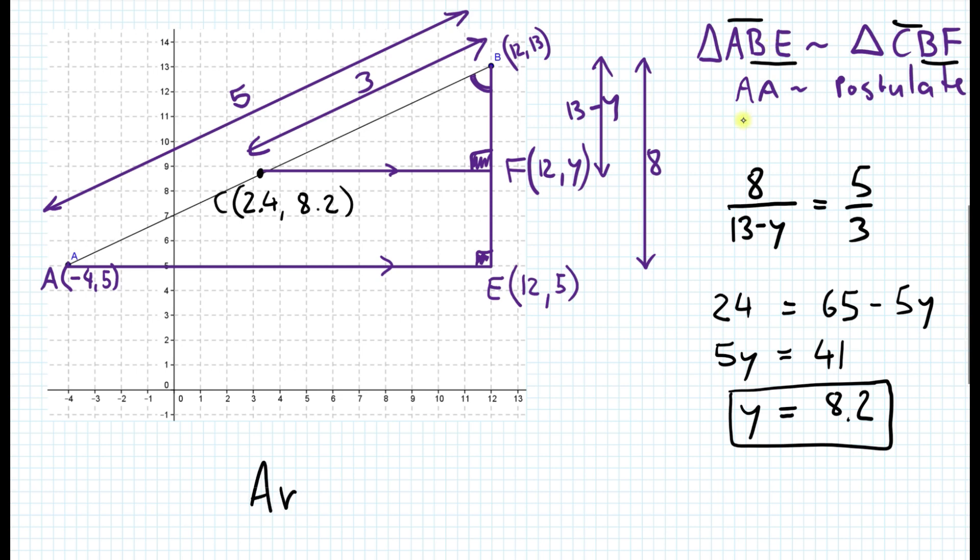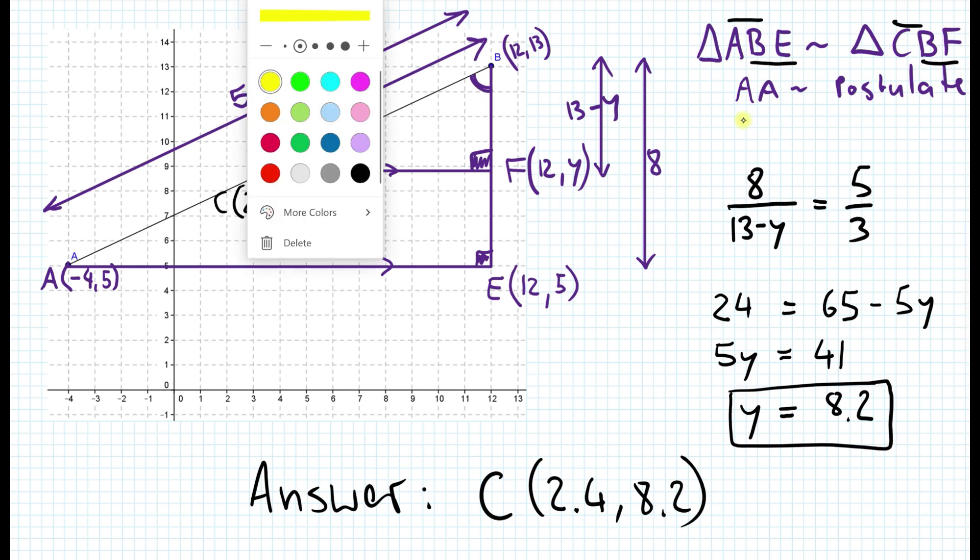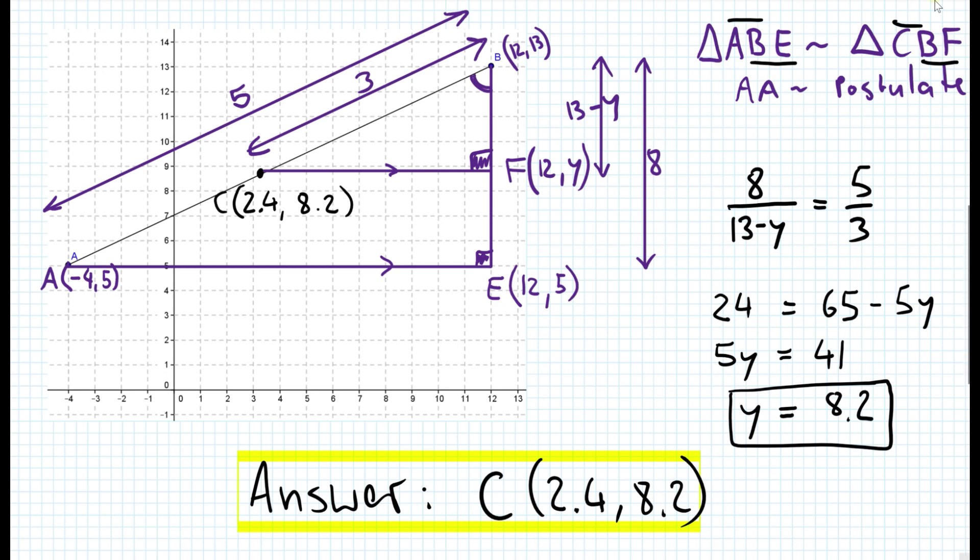The answer is, let me write this here again, that the C has a coordinate of 2.4 comma 8.2. And that's basically it. So let me highlight that as well. That's it for today's lesson.